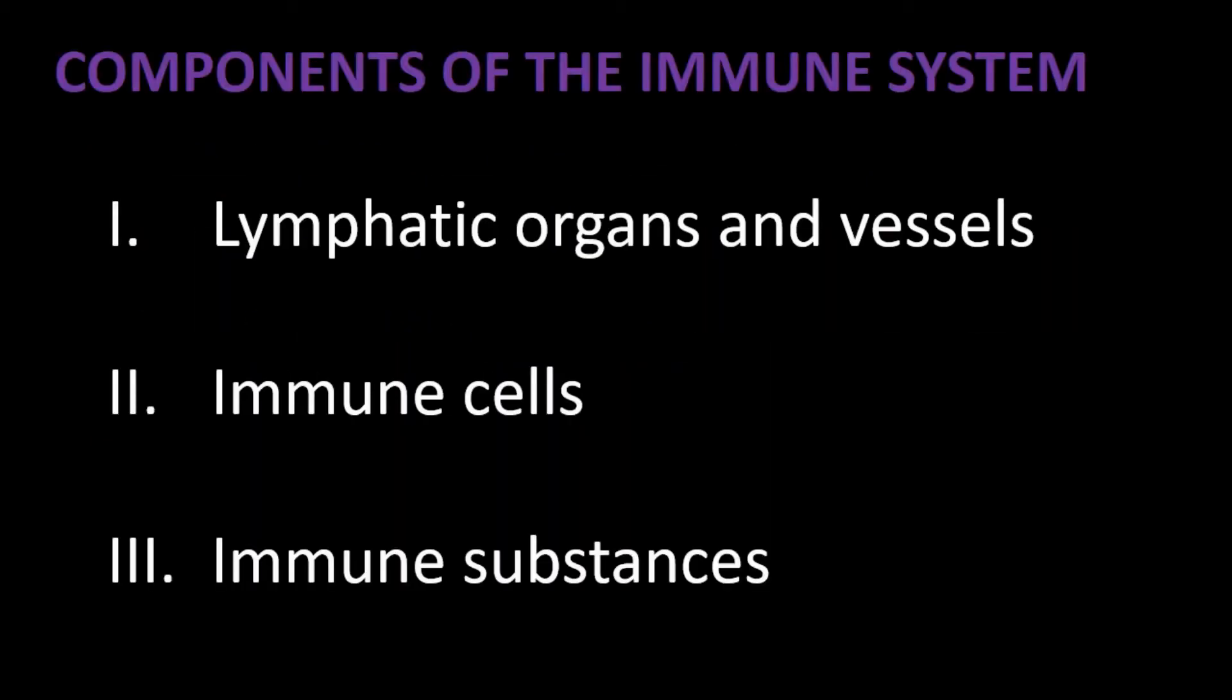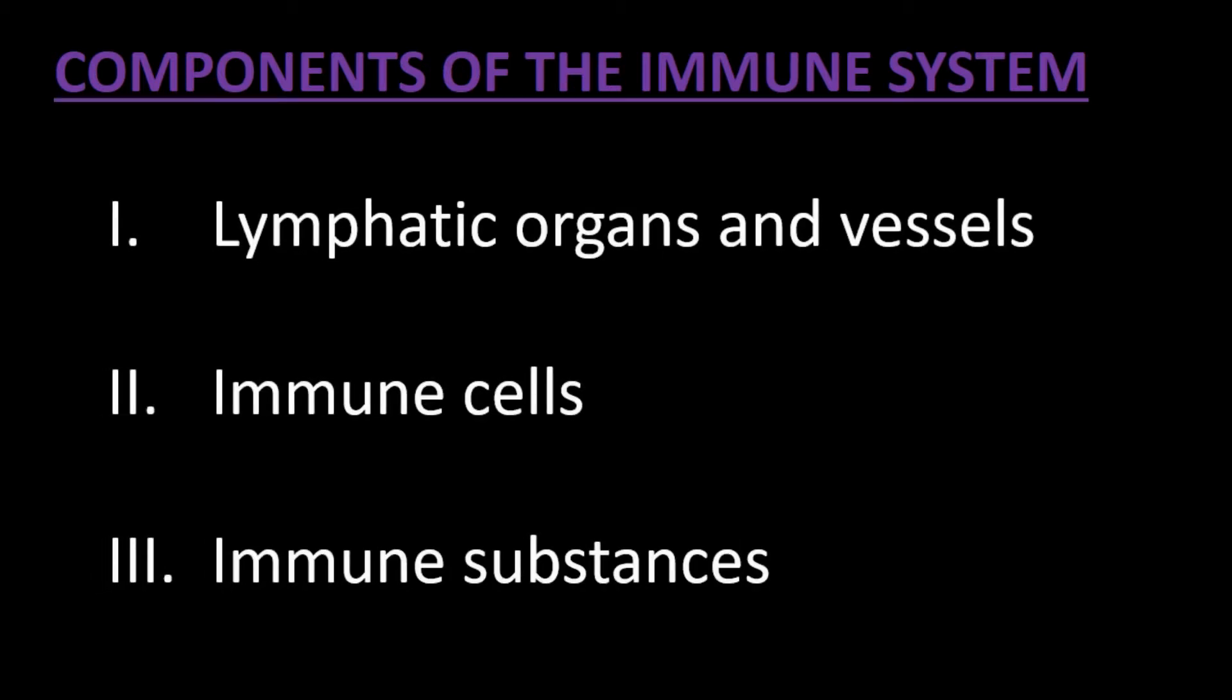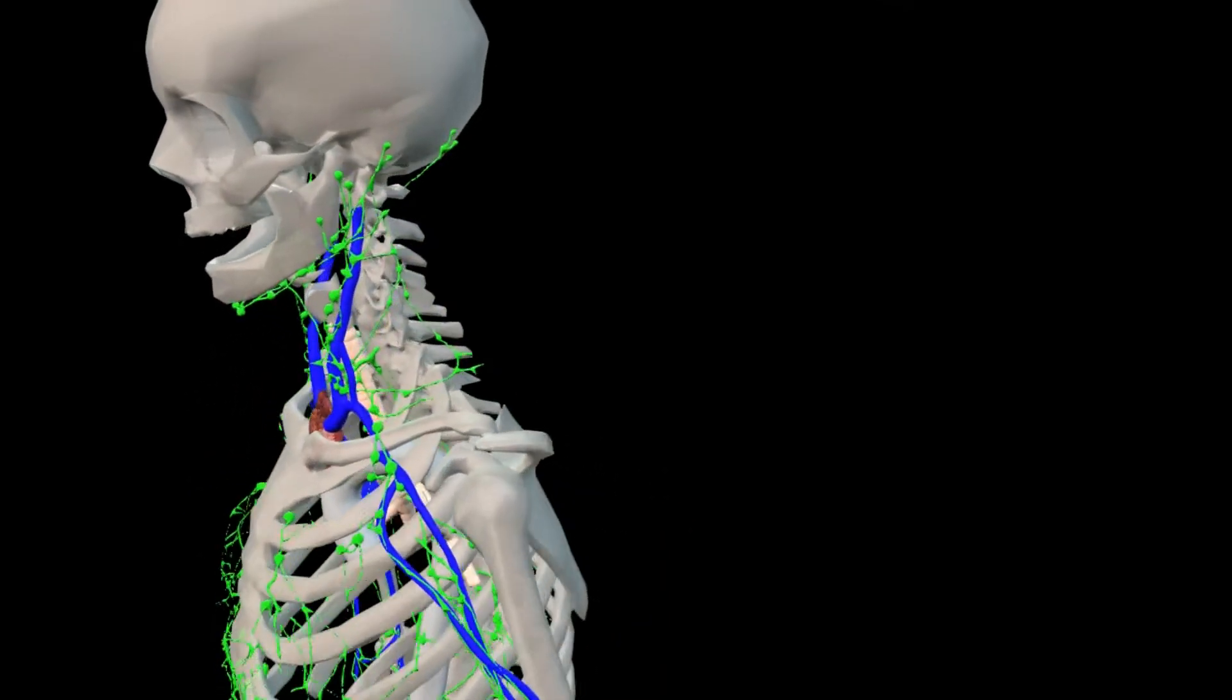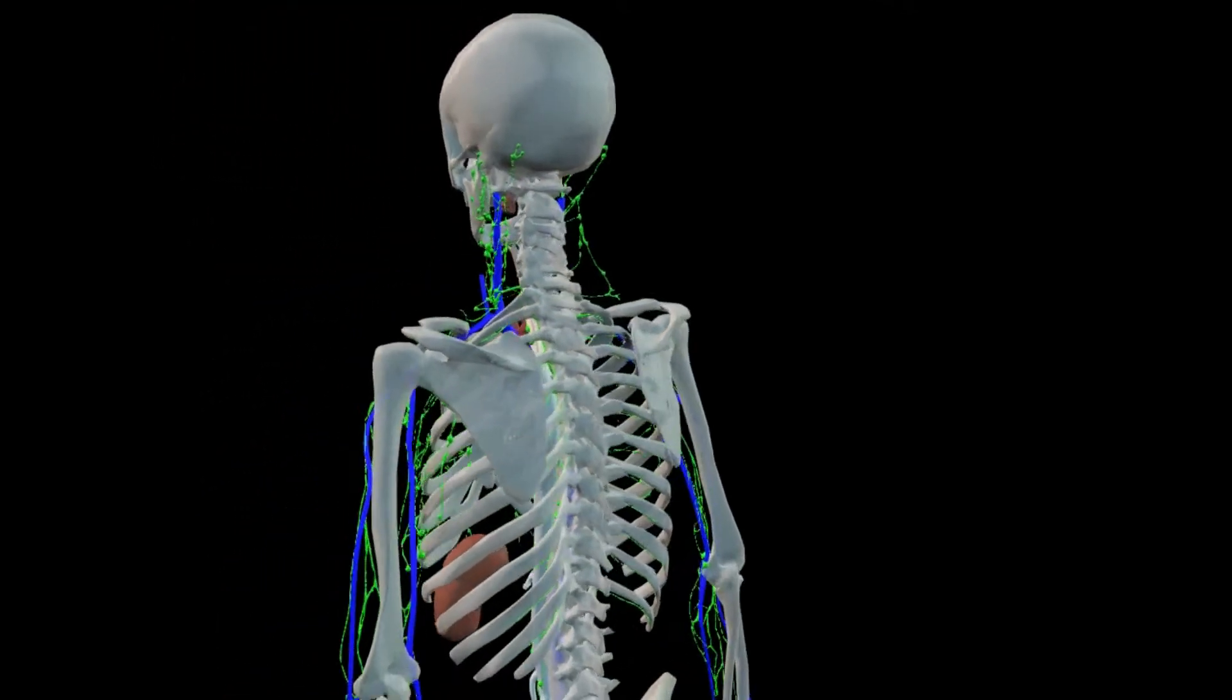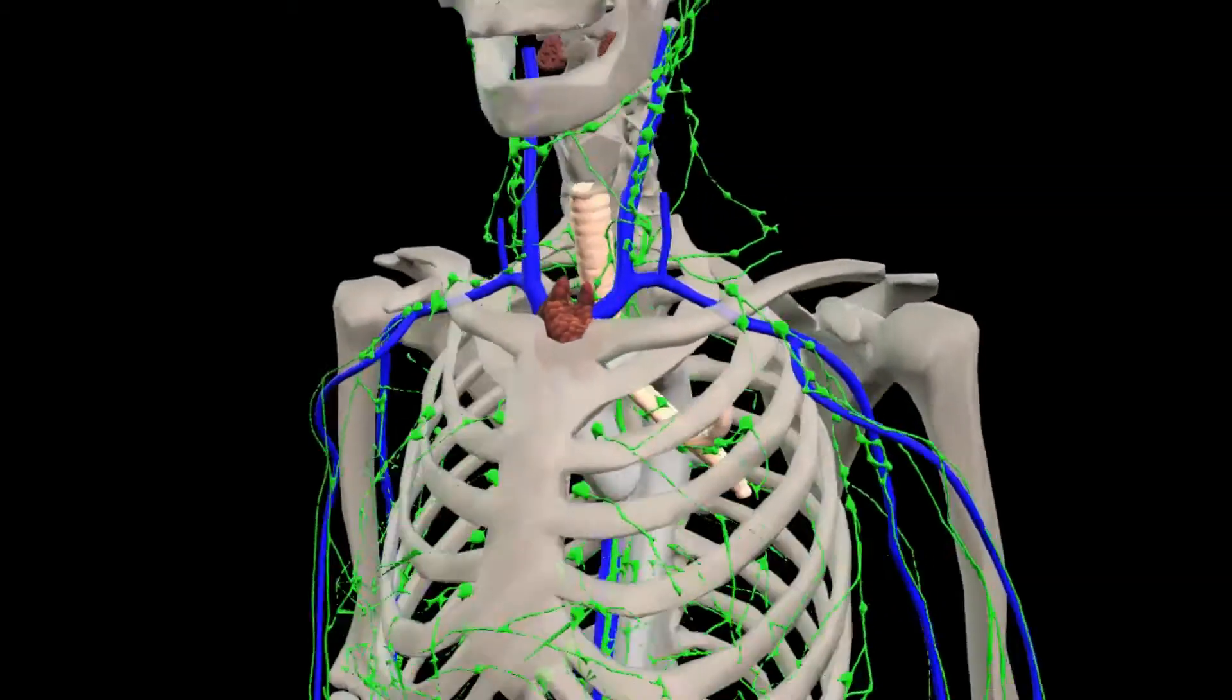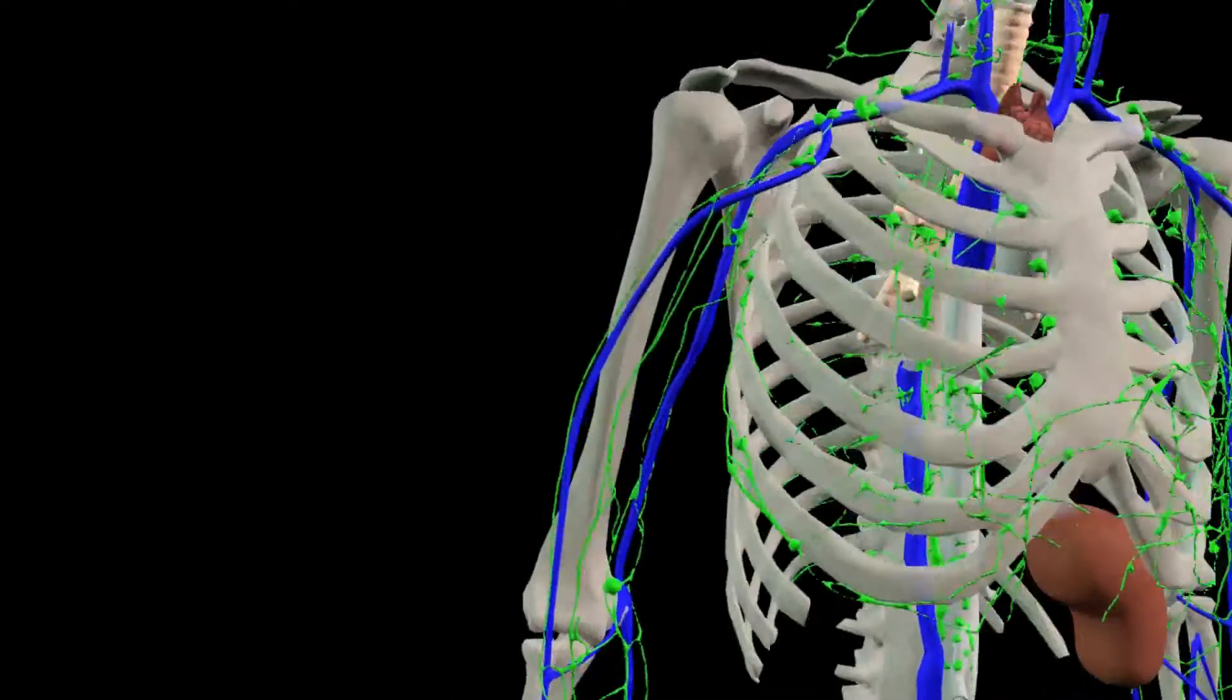The immune system includes three components: lymphatic organs and vessels, immune cells, and immune substances. The immune system is a complex network of cells, tissues, organs, and substances that helps the body fight against infections and other diseases.